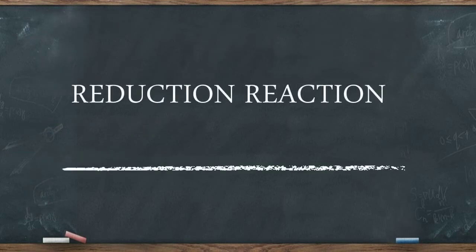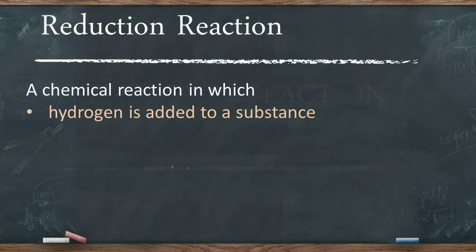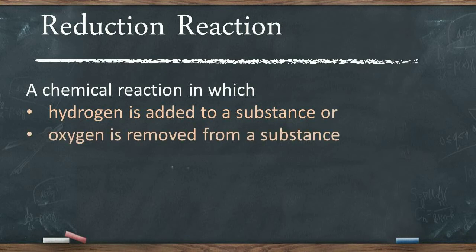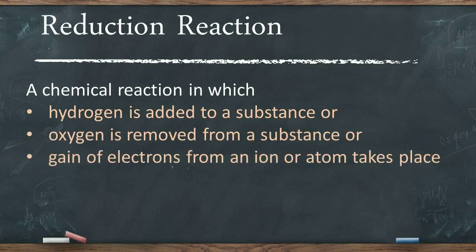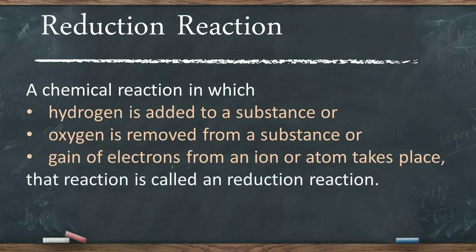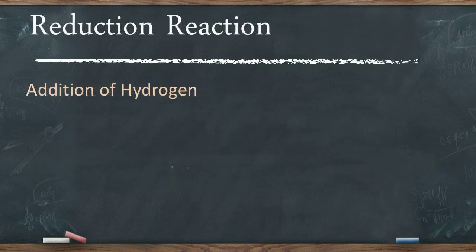Now let us learn about reduction reaction. A chemical reaction in which hydrogen is added to a substance, or oxygen is removed from a substance, or gain of electrons from an ion or an atom takes place, is called a reduction reaction. As addition of hydrogen to a substance is called a reduction, addition of hydrogen to chlorine to form hydrogen chloride represents a reduction reaction.